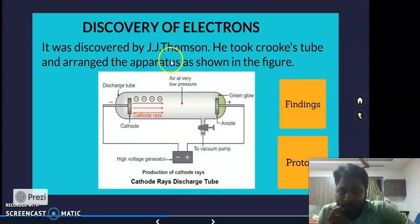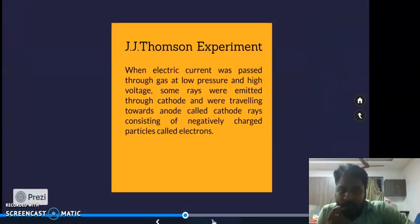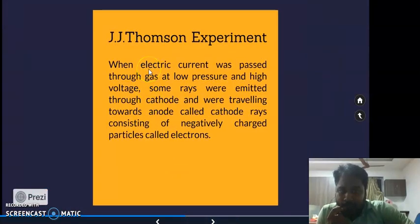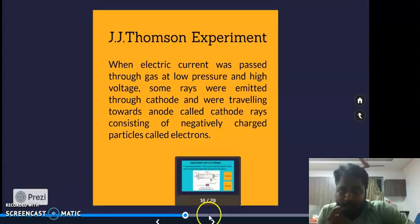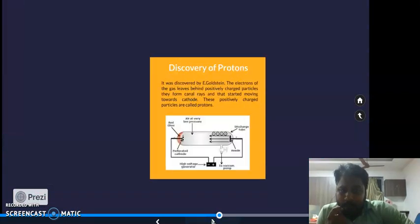The findings of this experiment: when electric current was passed through gas at low temperature and high voltage, some rays were emitted through the cathode and traveled towards the anode, called cathode rays. Those cathode rays have negatively charged particles, and those particles are termed as electrons.